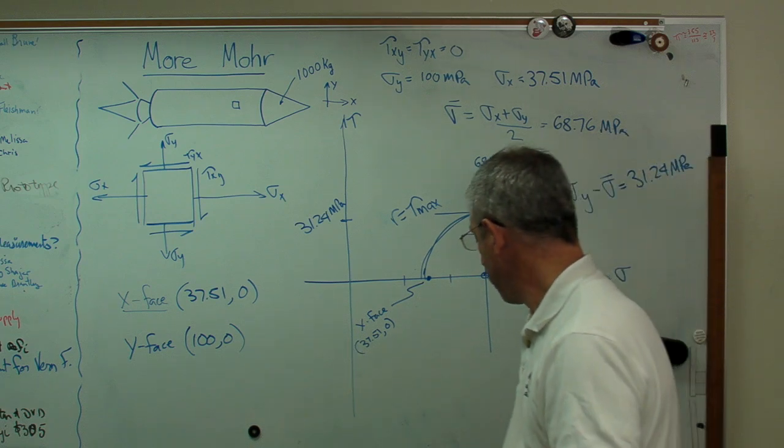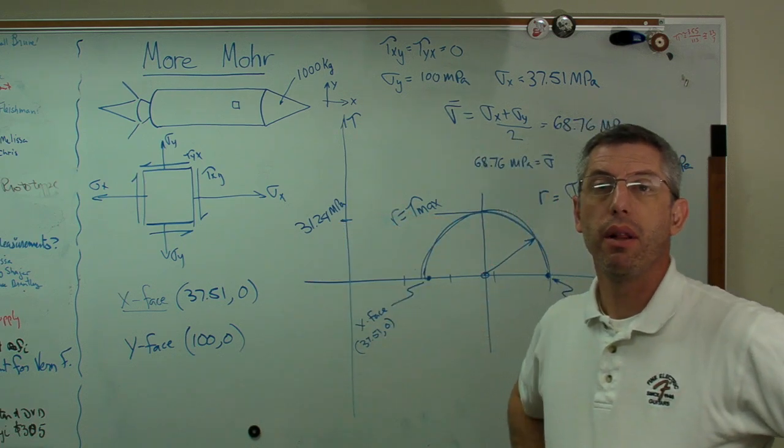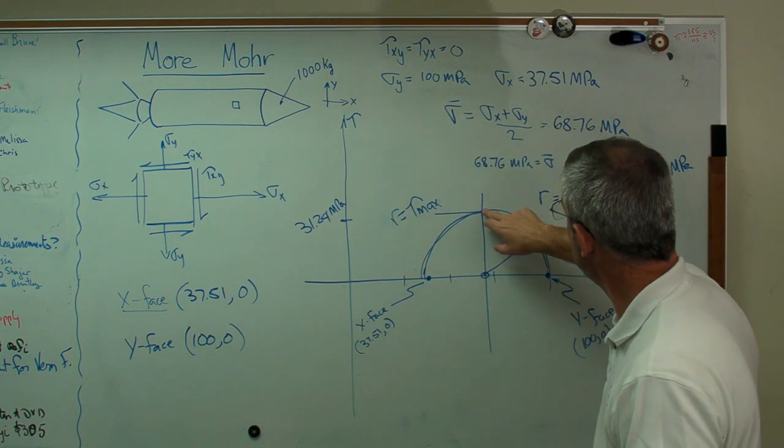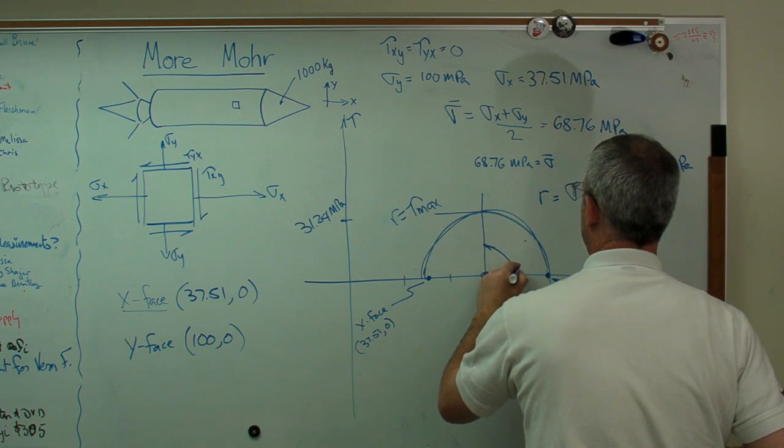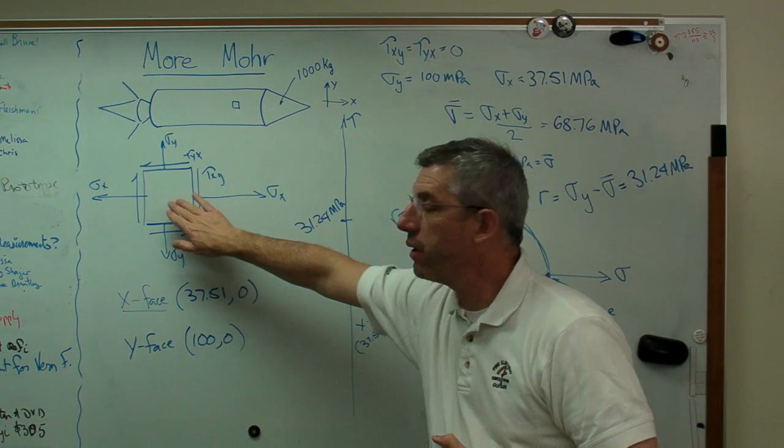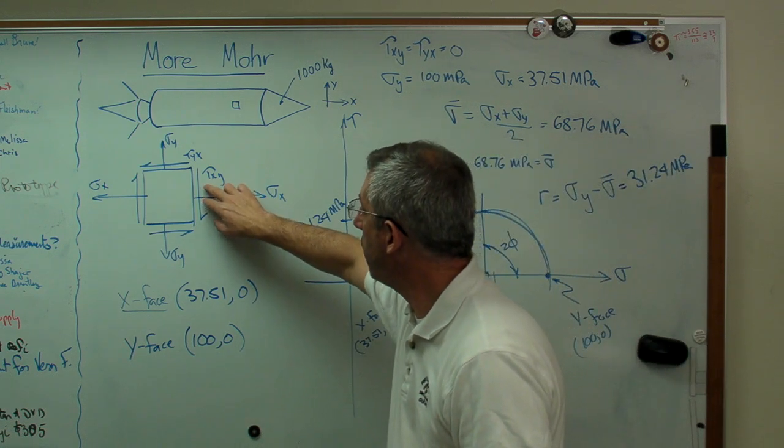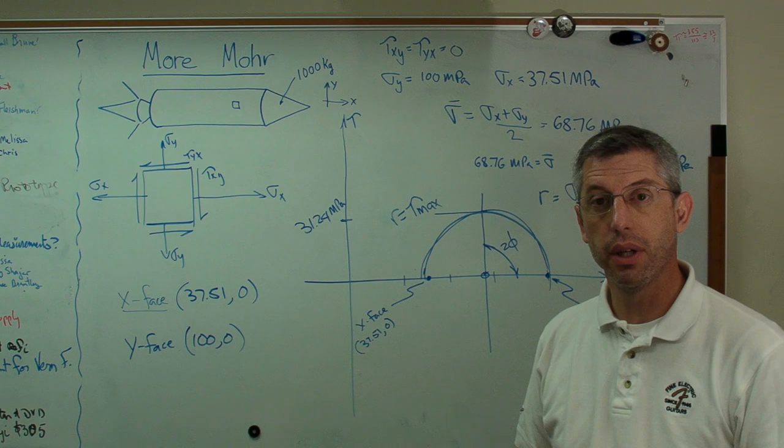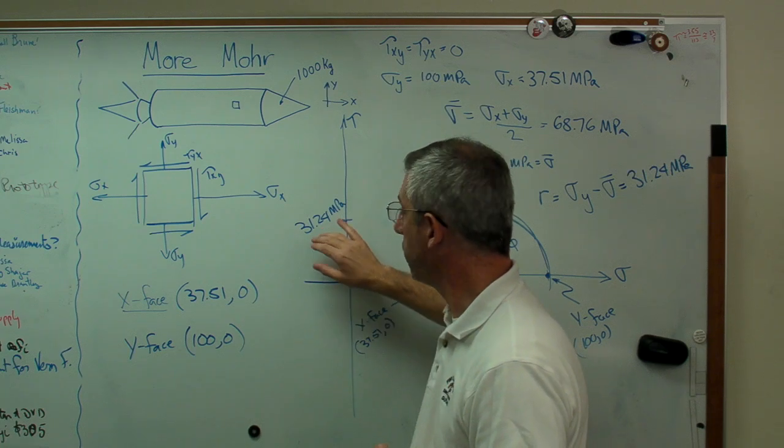So, there we go. We've calculated sigma x, sigma y, drawn Mohr's circle, and found out that tau max, the maximum shear stress, is this. And because this angle is 2 phi, that means I have to rotate my stress element 45 degrees. If I rotate my stress element 45 degrees, that face right there, the x face, will be seeing 31.24 megapascals. So, even though tau xy and tau yx are zero, tau max is not zero. That's tau max.